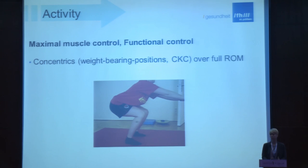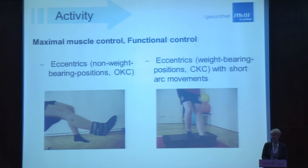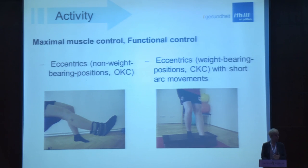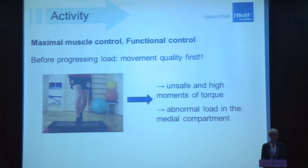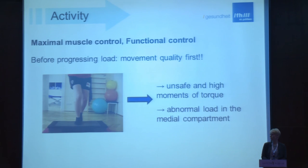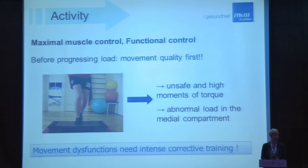Now you can increase concentric muscle strength exercises in weight-bearing positions over the full range of motion. Implement eccentric training — we know eccentric muscle training is very important for absorbing loads on the knee. Start in long weight-bearing positions, then continue to short to full weight-bearing. When increasing load, movement quality must come first. We do not want unsafe high knee movements or abnormal load in the medial compartment. Take your time to address and correct movement dysfunction in this phase.